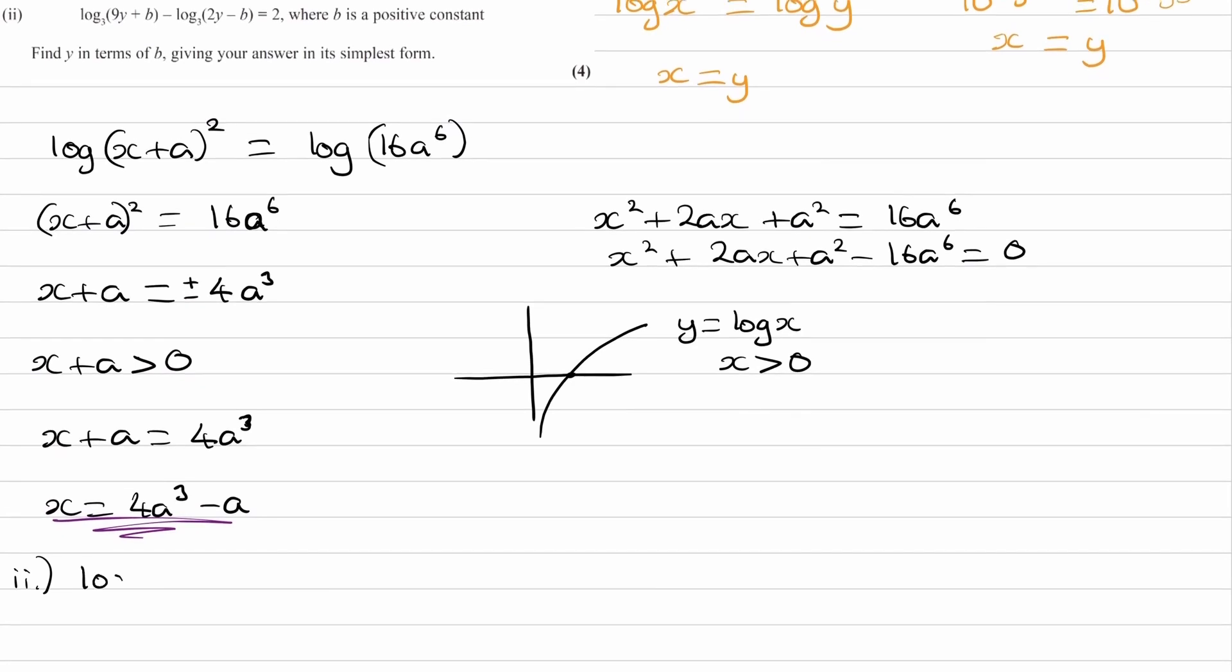So let's write this out. How we're going to be getting rid of the minus sign is by using the division rule. So the minus effectively turns into a divide, and then we can combine the two logarithms together.